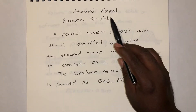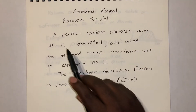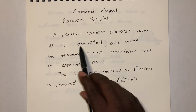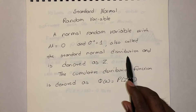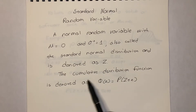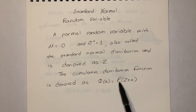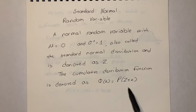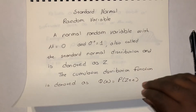A standard normal random variable is a normal random variable with μ = 0 and σ² = 1. It's called the standard normal distribution and is denoted as Z. The cumulative distribution function is denoted as φ(z) = P(Z ≤ z), meaning the probability of everything less than or equal to that particular value of z.